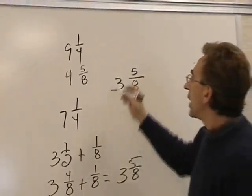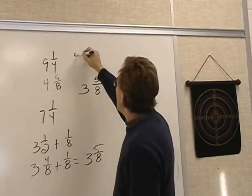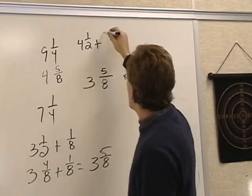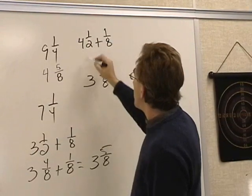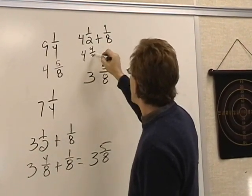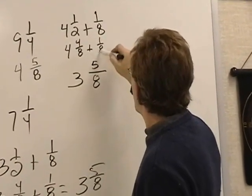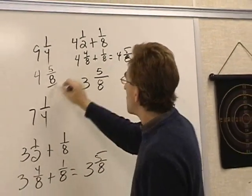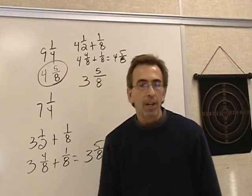Let's check it. Half of 9 is 4 and 1 half, plus half of 1 fourth is 1 eighth. This becomes 4 and 4 eighths, plus 1 eighth equals 4 and 5 eighths, which is what we came up with over here.